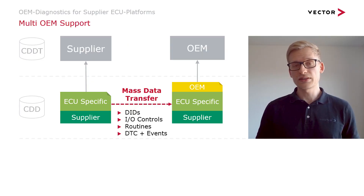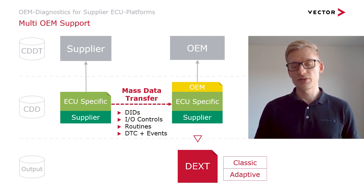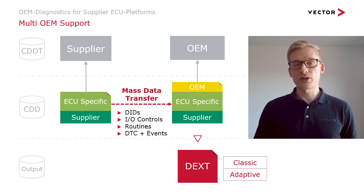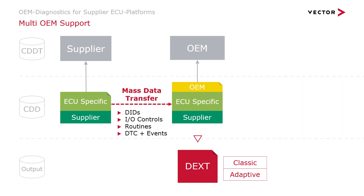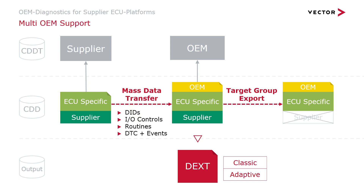If you then have your target document prepared for implementation, you can perform a text export directly from Candela Studio. And then you have a diagnostic extract which you can use for Autosar classic or Autosar adaptive implementations. Further, you can use the Candela Studio target group export to cut out your internal supplier specific contents from your target Candela file, and then you have an OEM CDD which contains only those information which shall be visible to external consumers.